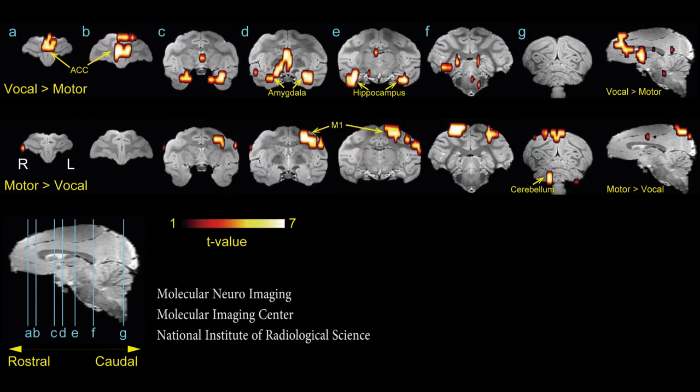During expression of motor tics, changes to rCBF were confined to the ipsilateral side of the injected hemisphere, primarily within the sensorimotor cortico-basal ganglia network.